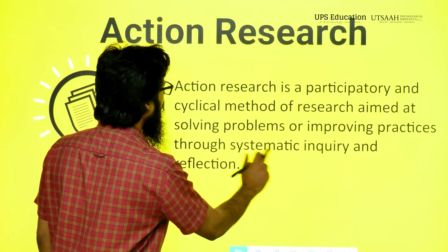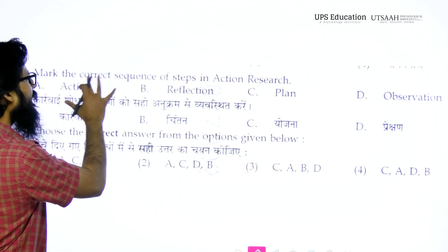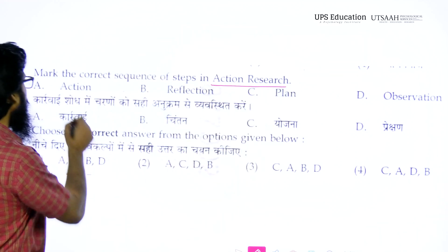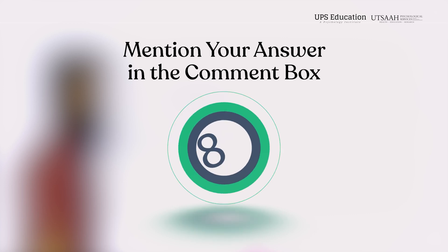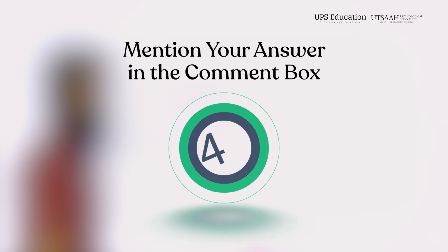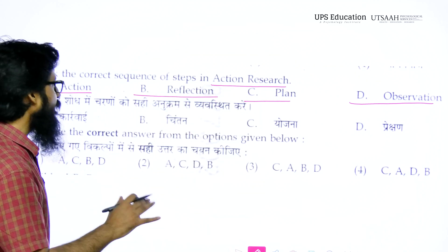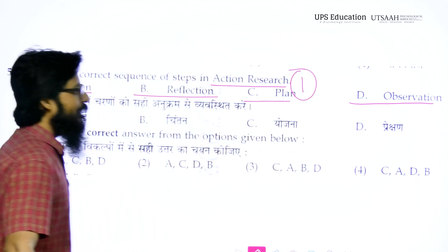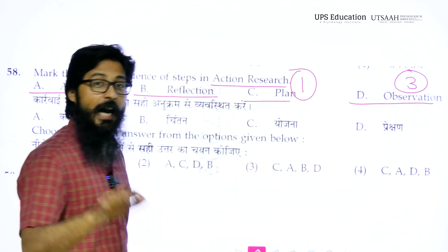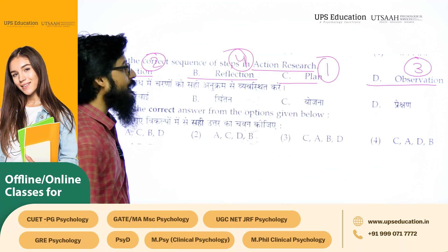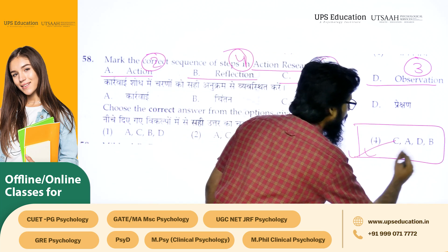Now I'm going back to answer the original question. We have to arrange the steps in a sequence. From the given options, first there will be planning (C), then action (A), then observation (D), and then reflection (B). So the correct answer is C, A, D, B — that will be the right answer.